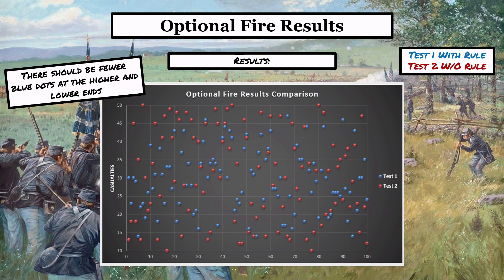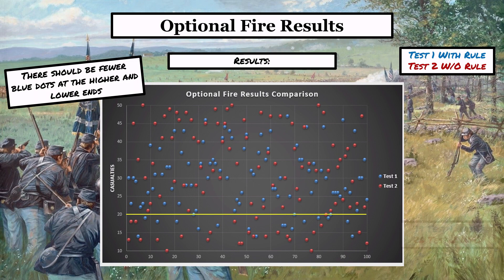There should be fewer blue dots at the higher and lower ends of this graph. On the left-hand side you have casualties 10 through 50, and on the bottom it's the number of tests, 0 to 100. You should see fewer blue dots in the high range between 40 and 50 losses and the low range between 10 and 20 losses. Just by eyeballing it you can see red is everywhere, but the blue is concentrated more towards the center. Below the 20-loss limit, there are 26 fire results without the rule checked and 19 fire results with the rule being used, so you have a higher probability of an outlier without the rule.